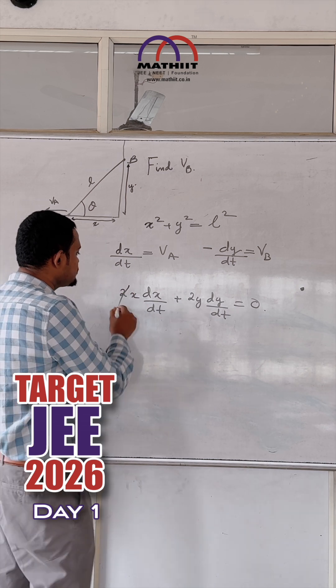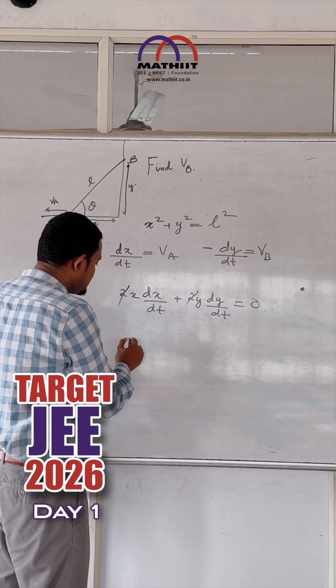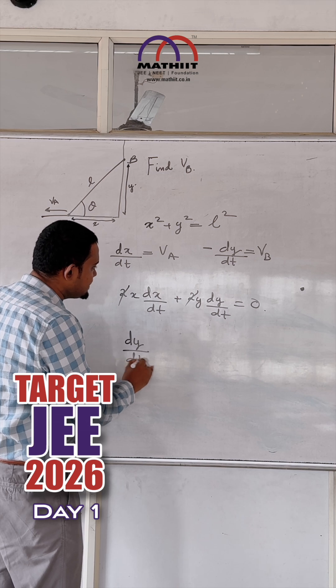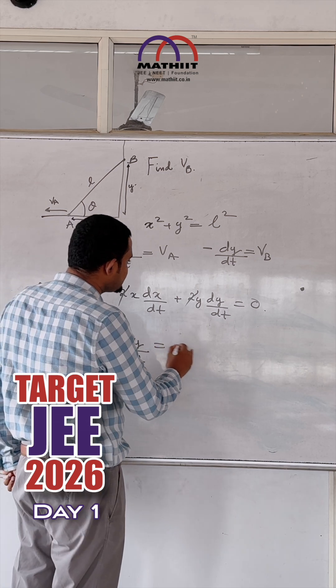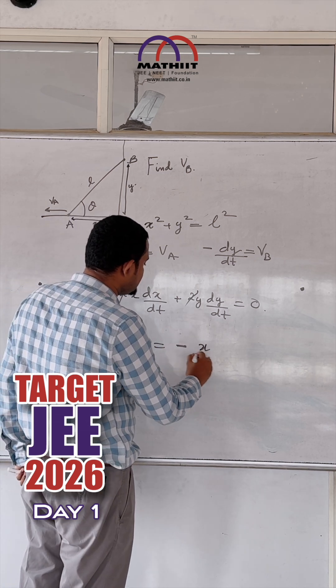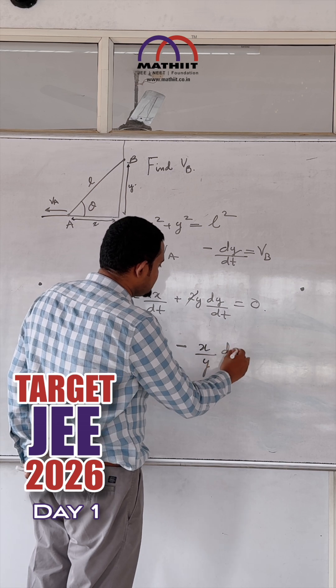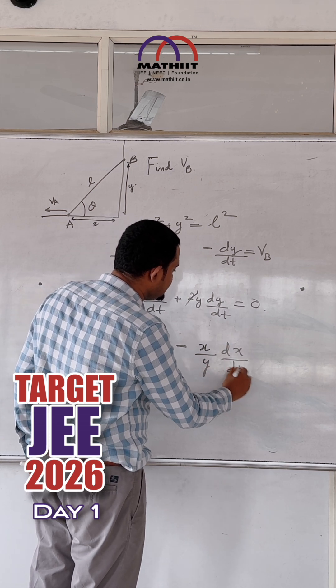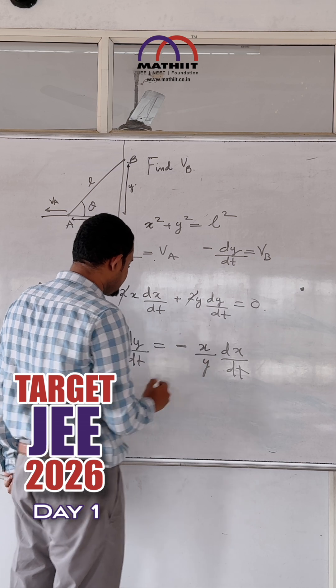And we get DY by DT is equal to minus X by Y DX by DT.